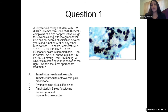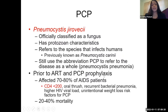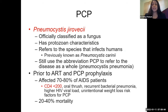This is a case of pneumocystis pneumonia, and the correct answer is Bactrim. PCP is still the acronym to describe pneumonia due to Pneumocystis jirovecii, which is officially classified as a fungus, although it has protozoan characteristics. Prior to ART and PCP prophylaxis, it affected the overwhelming majority of AIDS patients, typically with a CD4 count less than 200. Risk factors include oral thrush, recurrent bacterial pneumonia, higher HIV viral load, and unintentional weight loss. Mortality untreated is up to 40%.